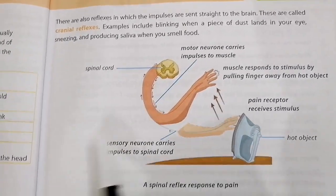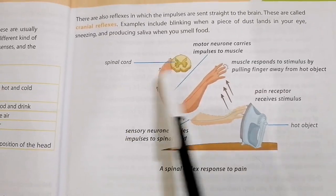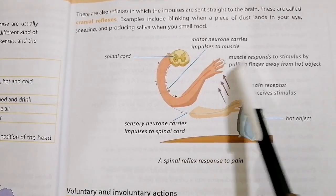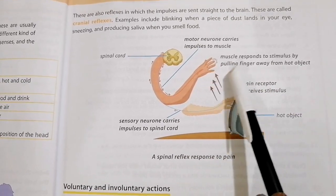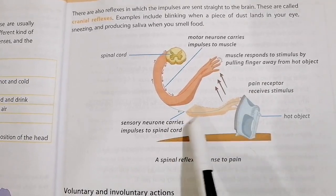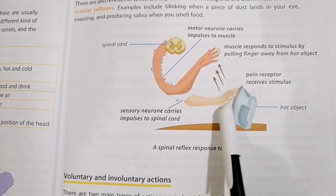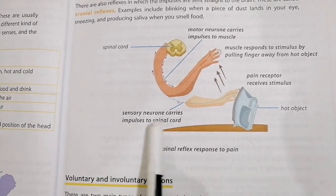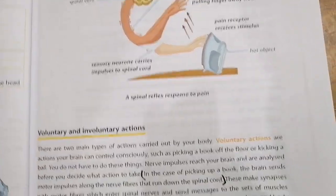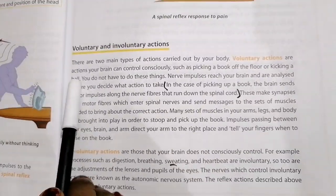In this picture you can see the spinal cord. The motor neuron carries impulses to the muscles, and the muscles respond depending on whether the object is hot or cold. The hand is near the hot object; pain receptors act as the stimulus. The sensory neuron carries the impulses to the spinal cord, sending the message about what the impulses are signaling.